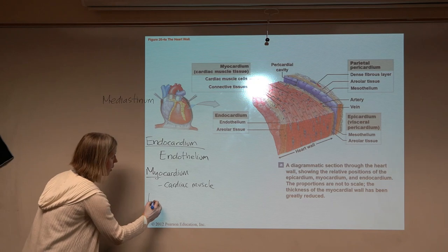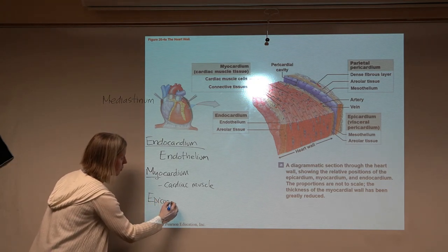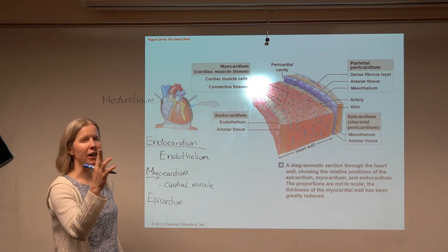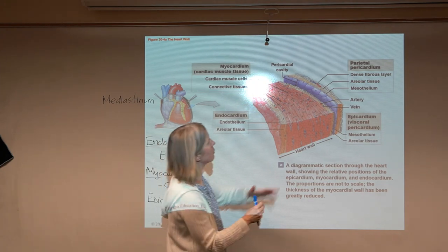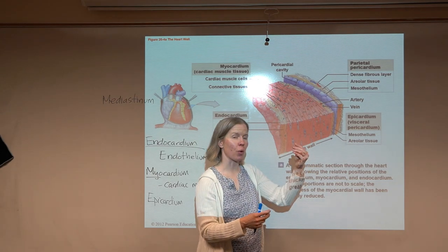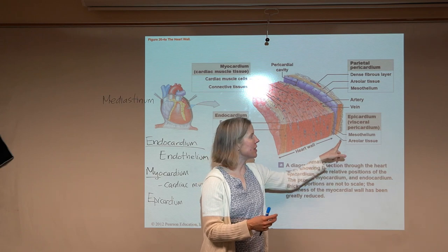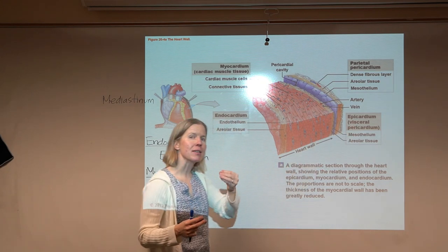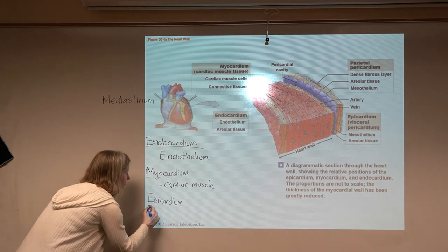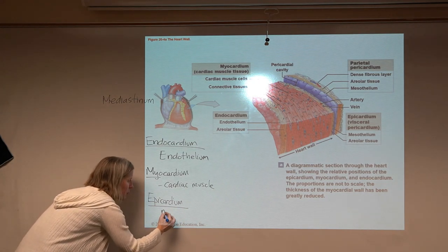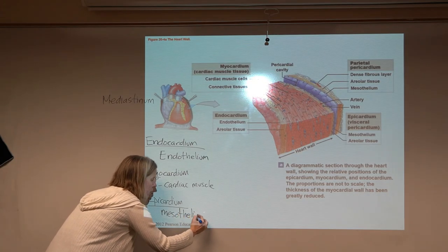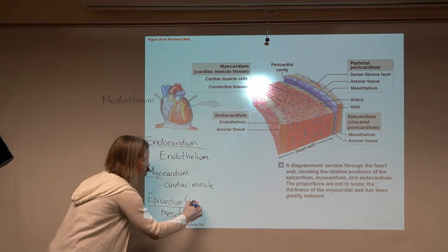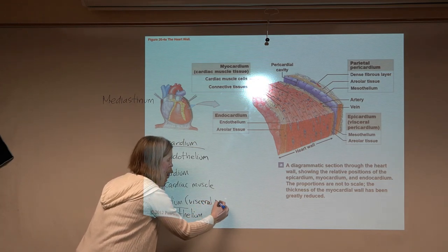The outer layer is the epicardium — and epicardium is synonymous with visceral pericardium. It's simple squamous epithelial cells; because it's lining a cavity, we call it mesothelium rather than endothelium. So epicardium equals visceral pericardium, and it is a mesothelium.